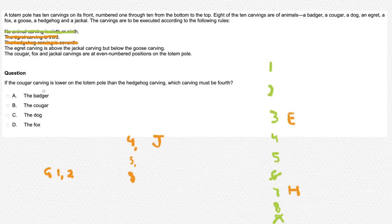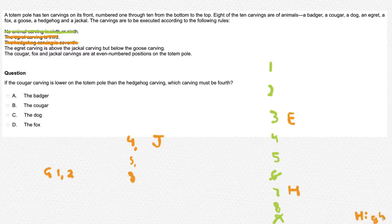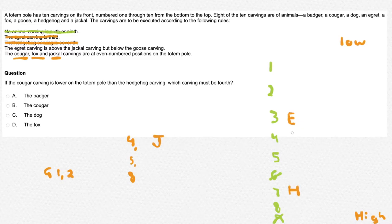If the cougar carving is lower on the totem pole than the hedgehog carving, which carving must be 4th? Remember, the numbers are ordered 1 through 9, with 9 as the highest point and 1 as the lowest. If the cougar is lower than the hedgehog at position 7, that leaves only positions 4, 5, 2, or 1 for the cougar. Since the cougar must be at an even-numbered position, it must be position number 4. Therefore, the cougar is our final answer.